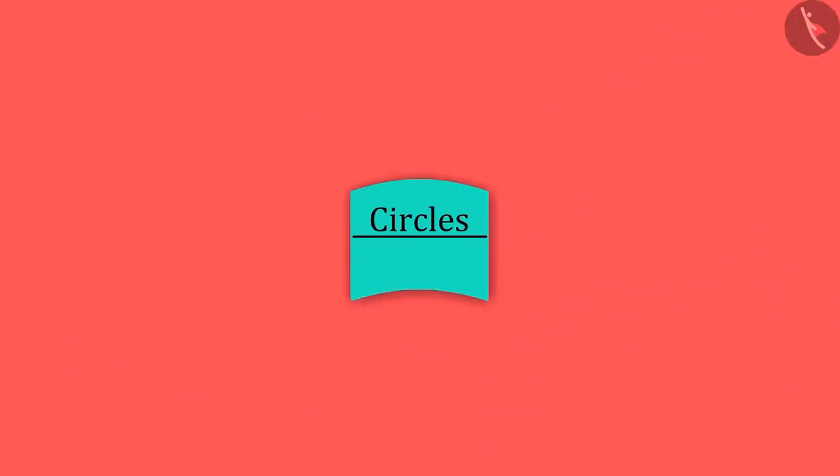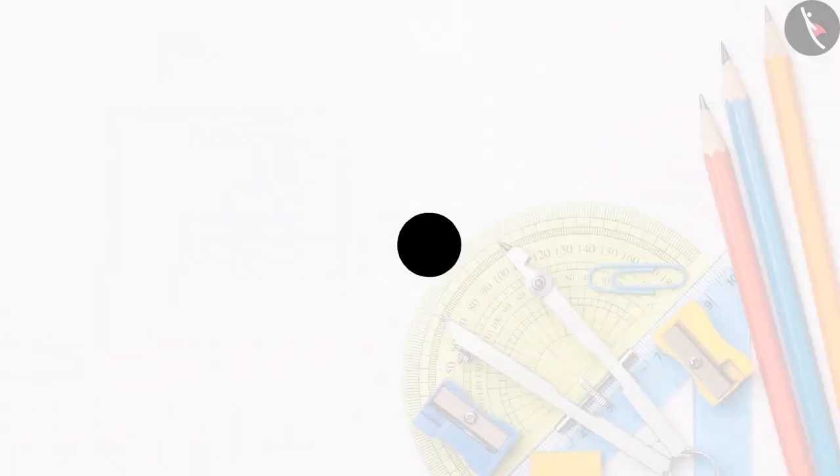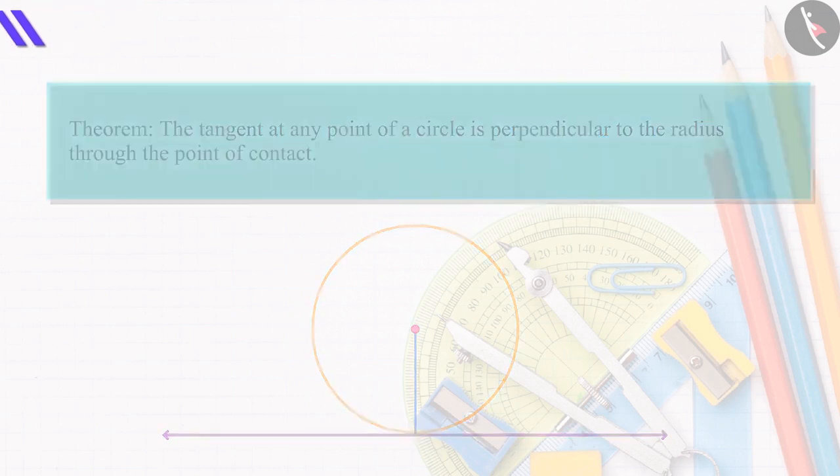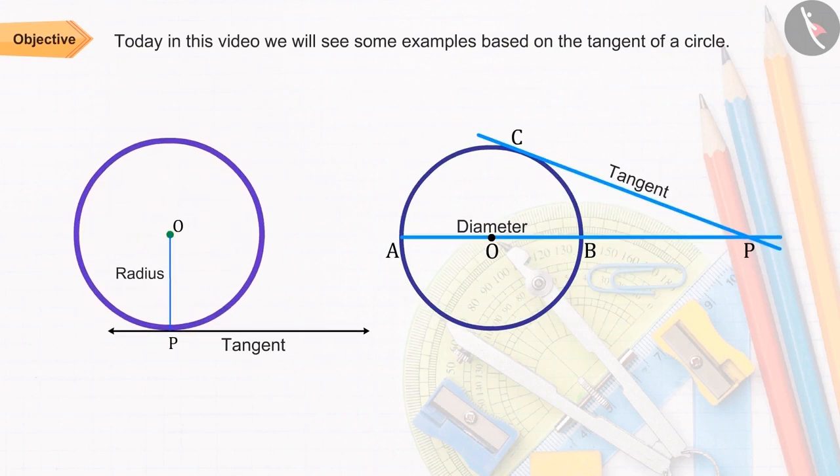Welcome to this video. In the previous video, we studied the relationship between the radius of a circle and its tangent. Today, in this video, we will see an example based on this.